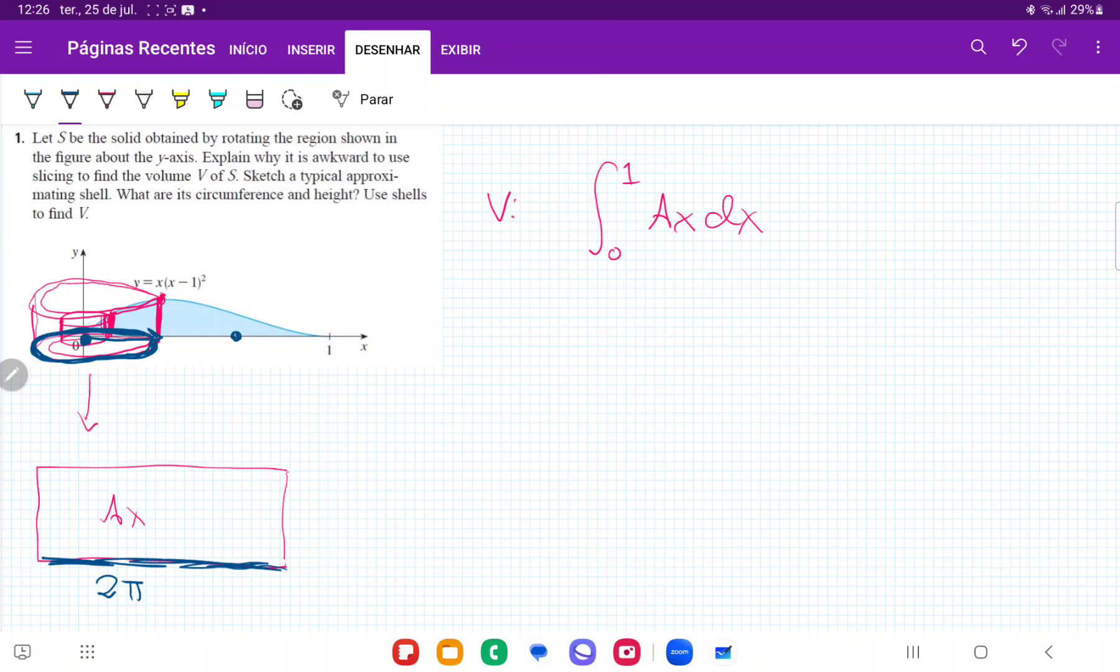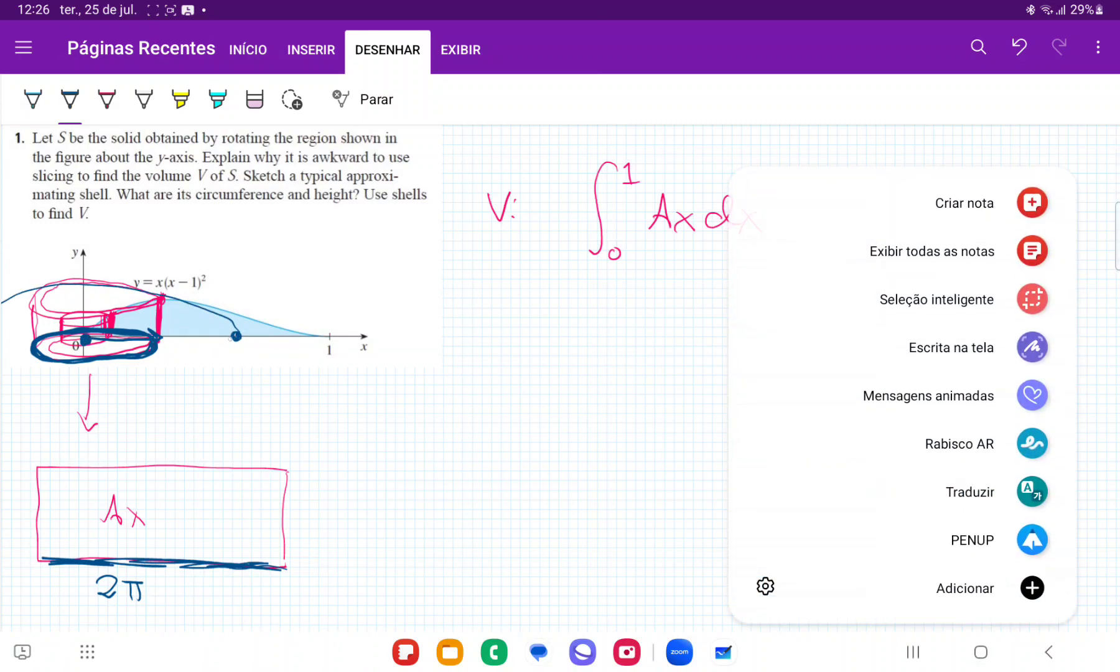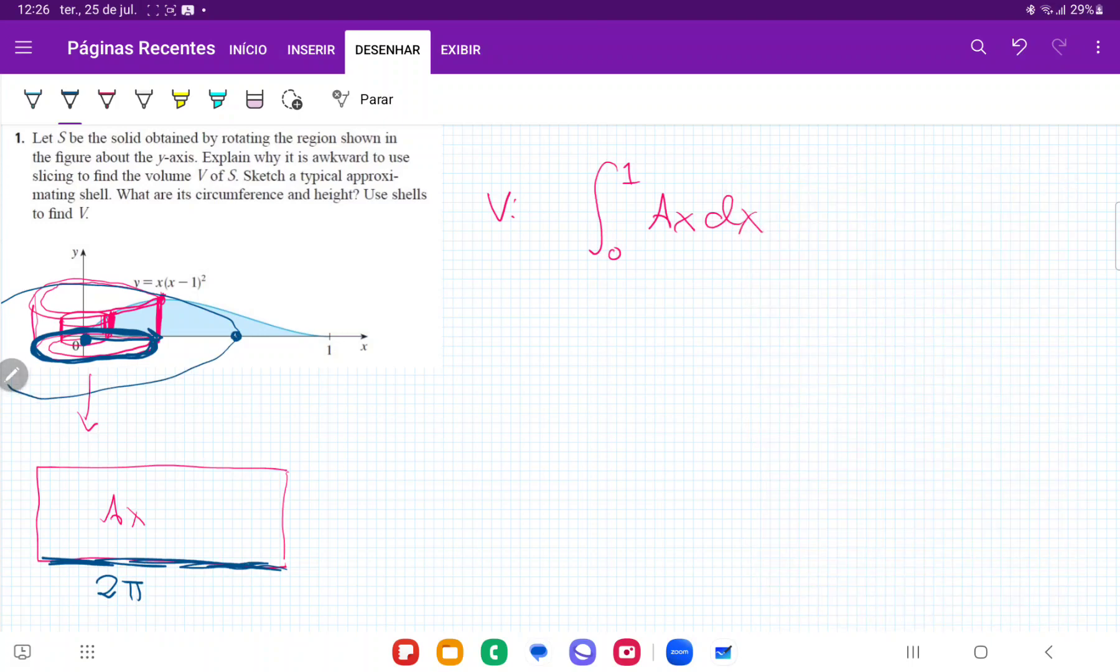So if my x is over here, that's going to be my radius. This is going to be a bigger circumference like so, and so we can see that the radius is just wherever I'm at on my x-axis. So it's just 2πx.